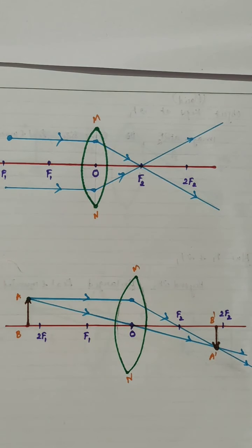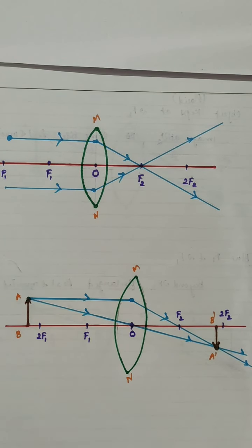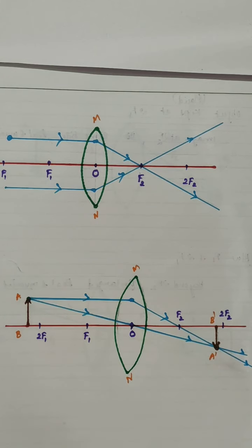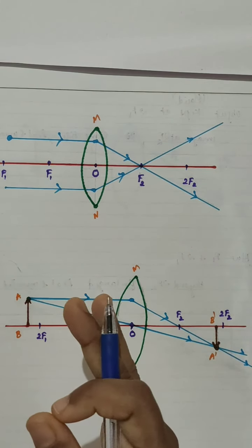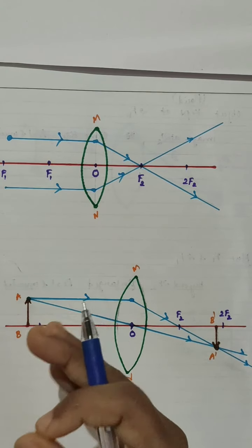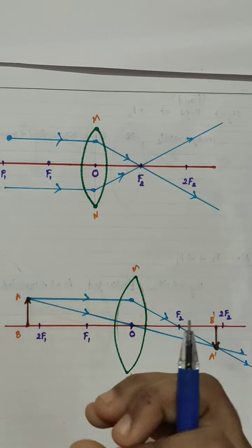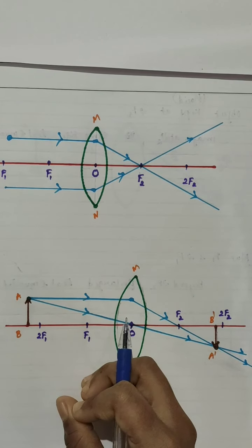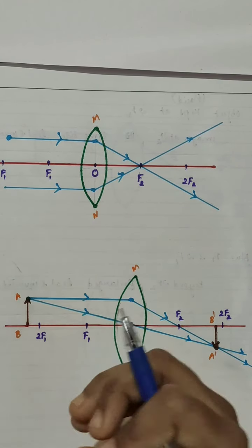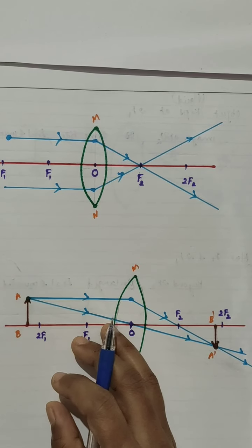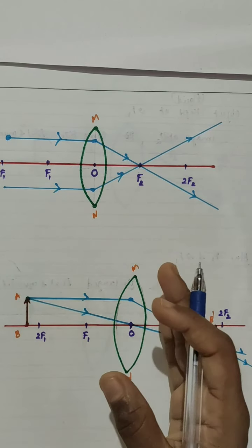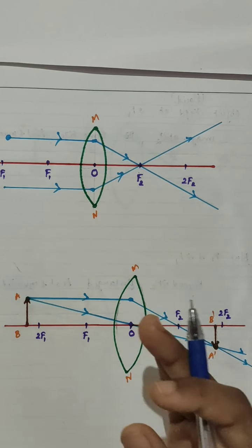To draw the ray diagram, we just want to consider at least two rays coming from an object. In the last class we discussed about three types of incident rays and their corresponding refracted rays which are quite convenient for us to draw the ray diagram. You can make use of any two of them to get the position as well as the characteristics of the image.